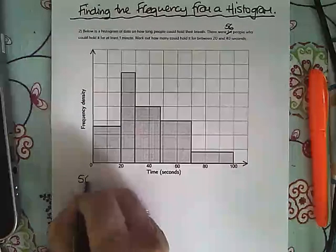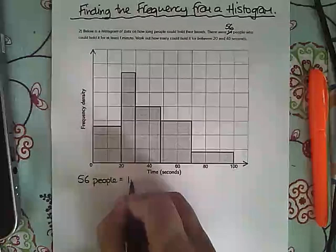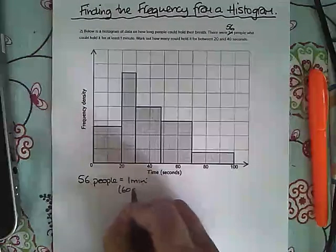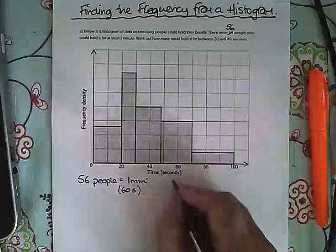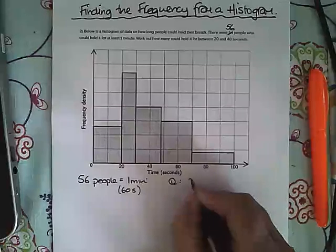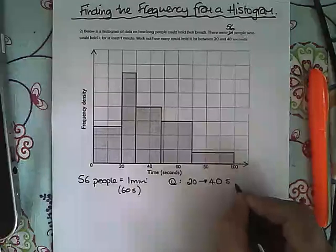First, 56 people can hold it for one minute, which is 60 seconds, because this axis is in seconds. The question wants us to find out how many people could hold it for between 20 and 40 seconds.